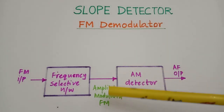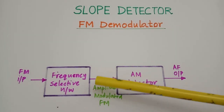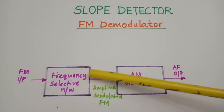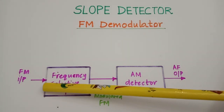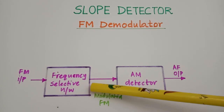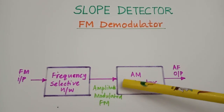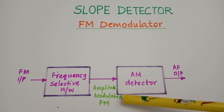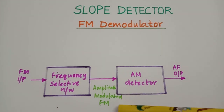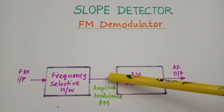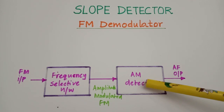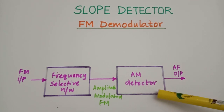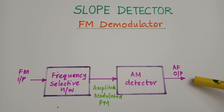This is the block diagram of a slope detector. It has two main blocks: a frequency selective network followed by an AM detector. The input to the slope detector is an FM modulated wave. It goes to the frequency selective network, and the output of that network is an amplitude modulated FM — a mixture of AM and FM — which we provide as input to the AM detector, and the output is the modulating signal.